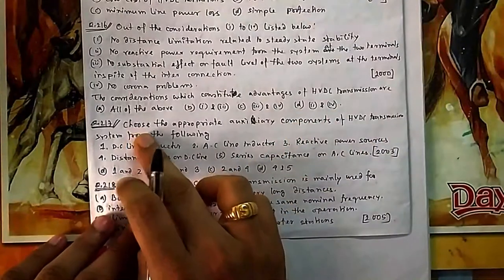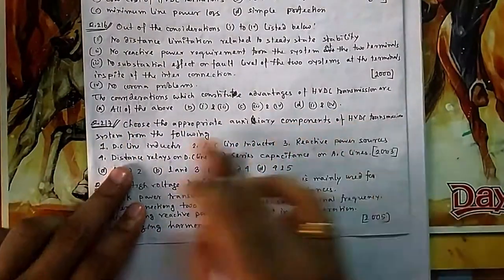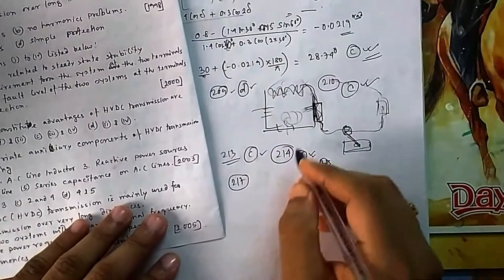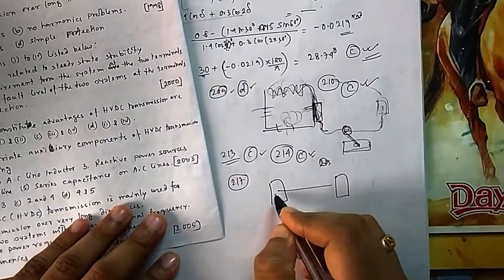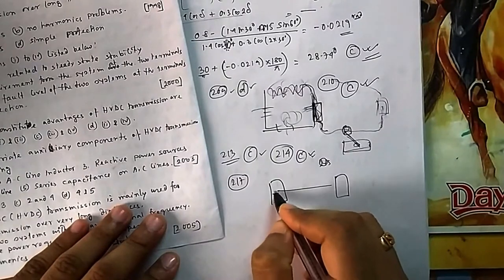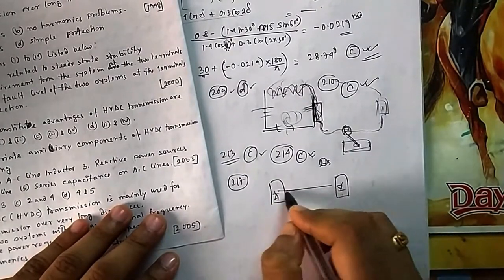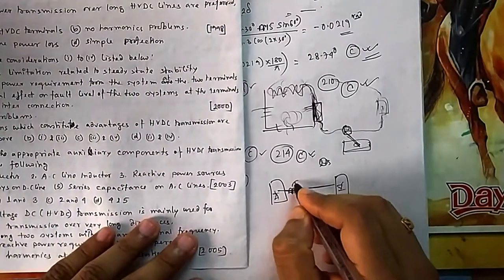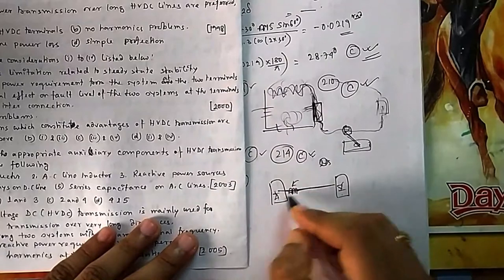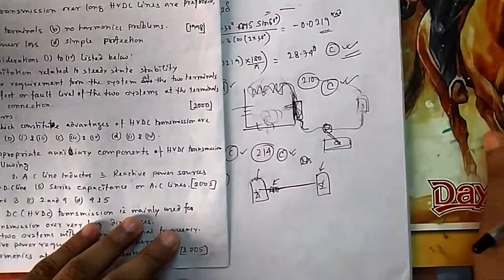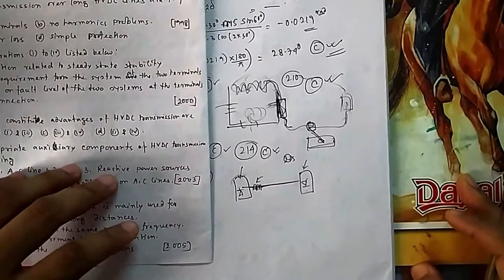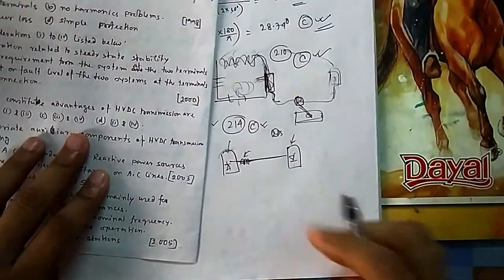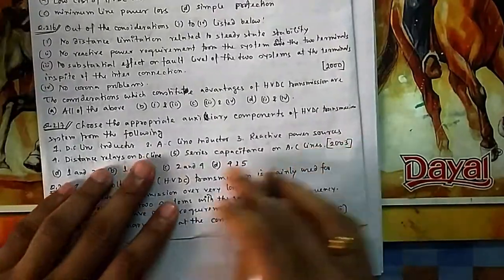Question 217: choose the appropriate auxiliary components of an HVDC transmission line. A DC inductor — yes, in an HVDC link we provide an inductor in series. This DC series inductor is provided to reduce harmonics in the line. Because of the rectifier and inverter there will be harmonics in the current, and the inductor doesn't allow sudden changes in current, thereby reducing harmonic content.